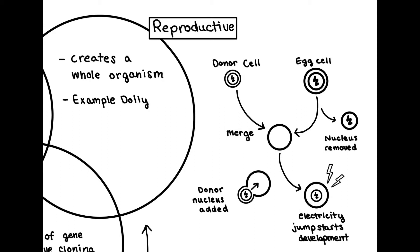An egg cell must be used because it is programmed to divide rapidly and create a new organism. The addition of the donor nucleus acts as fertilizing the egg cell, which then allows it to divide and create a new organism. If the egg cell nucleus was not removed, the resulting organism would have extra DNA, which is not good. The merged egg cell and donor nucleus are then given a jolt of electricity, which causes it to rapidly divide and create an organism.